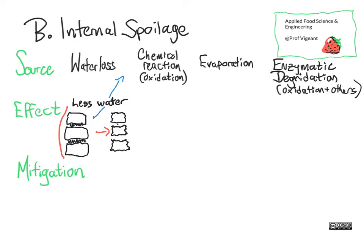If you imagine the cells kind of like balloons that were all stuck together, we went from having big full balloons that really pop when you bite into them, to having things that just kind of smoosh around. So the impacts are: it's mushy, it's not crisp. Flavor may change a little bit because some of the flavor compounds are dissolved in the water, and as there's less water their concentration changes, affecting the flavor. It's not harmful, it just means that this apple or carrot, instead of making a nice crisp chomp, now goes kind of... you know. I think everyone's had food like that.